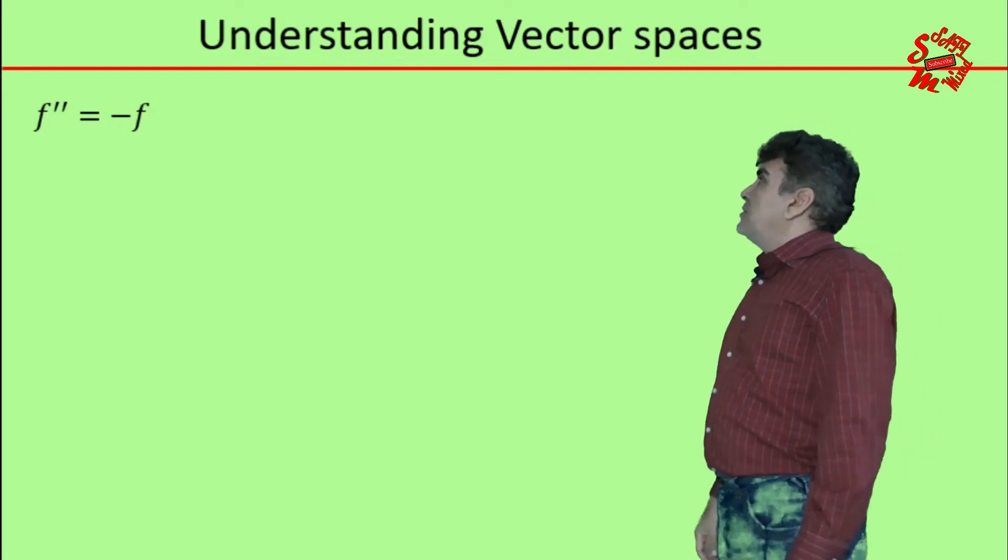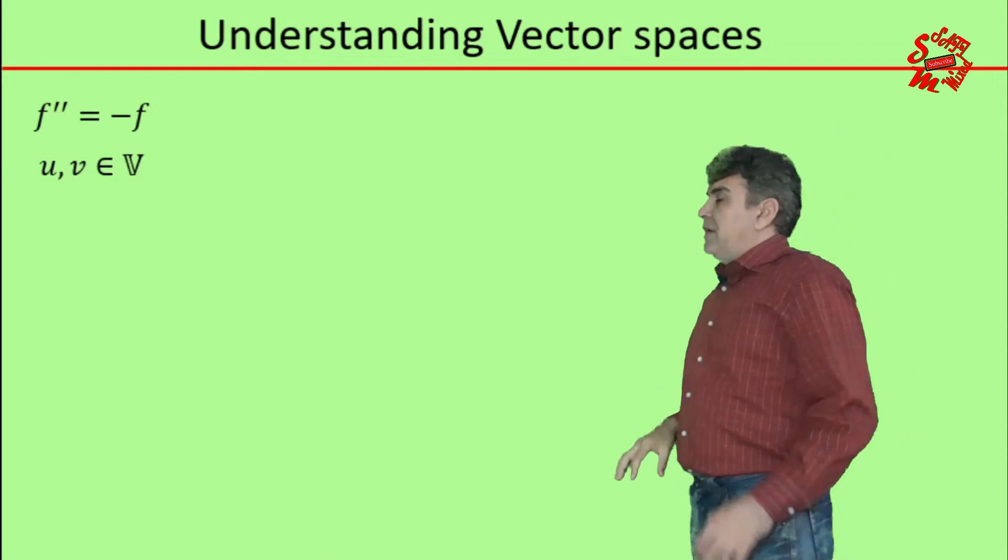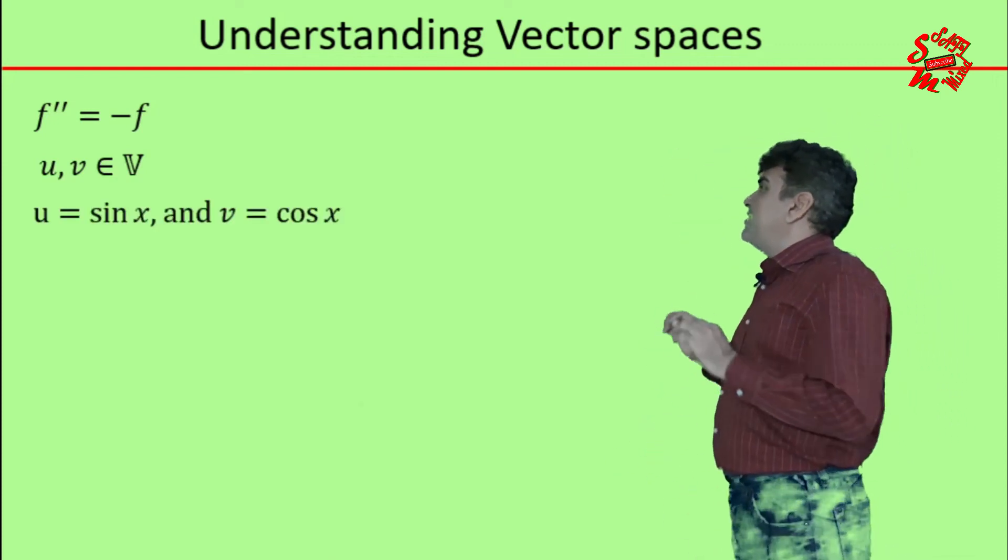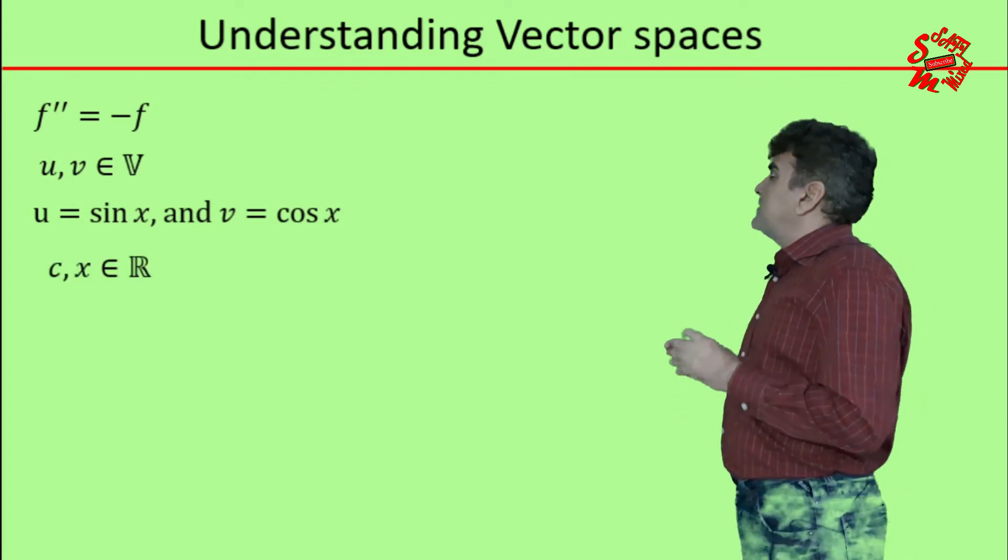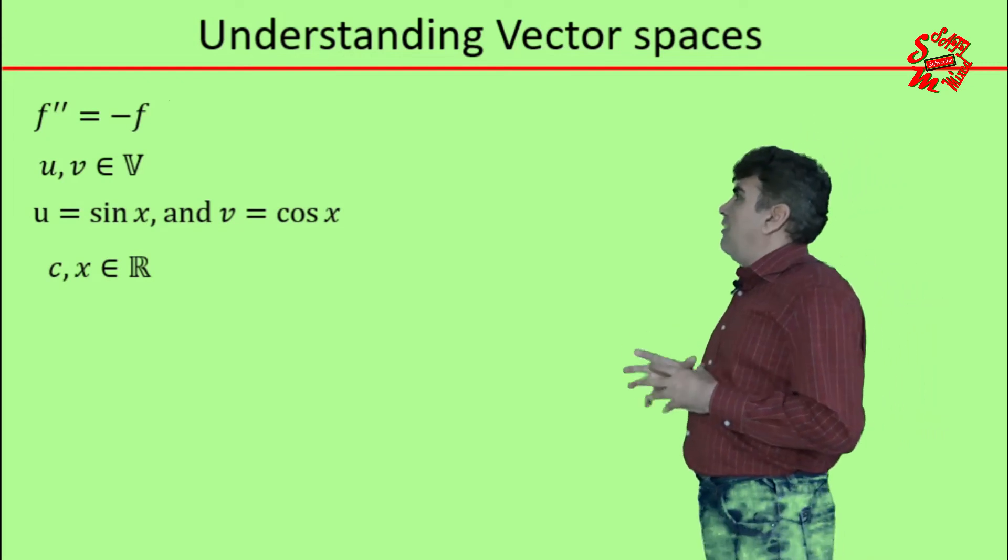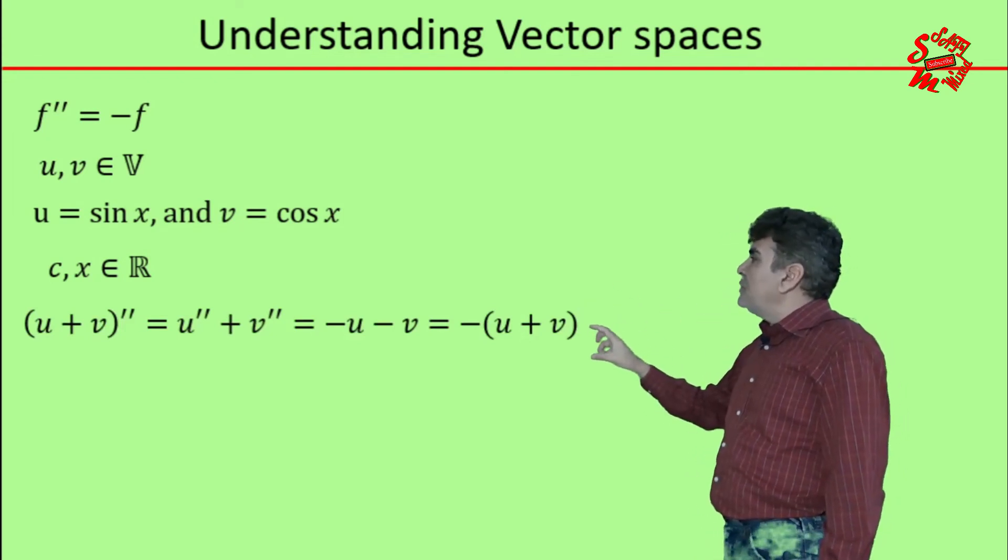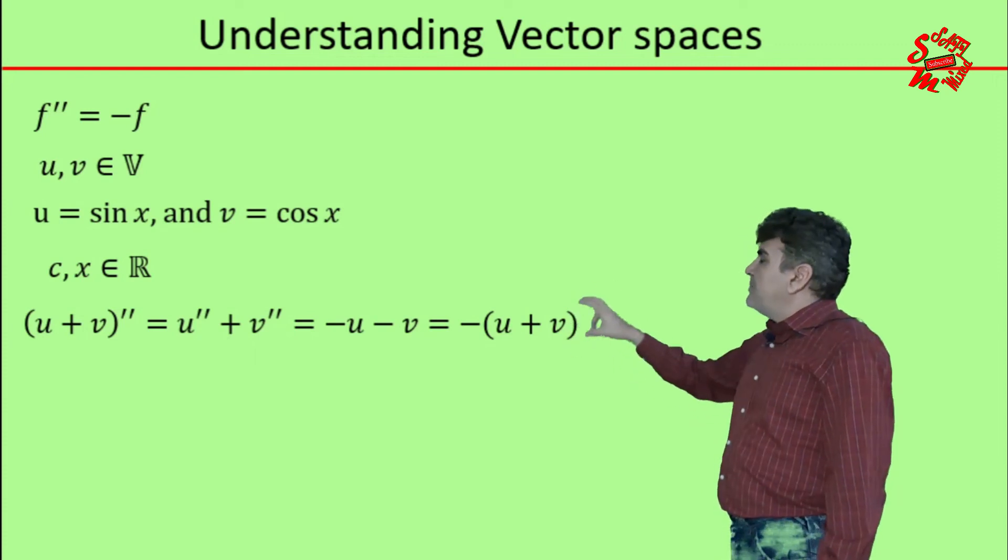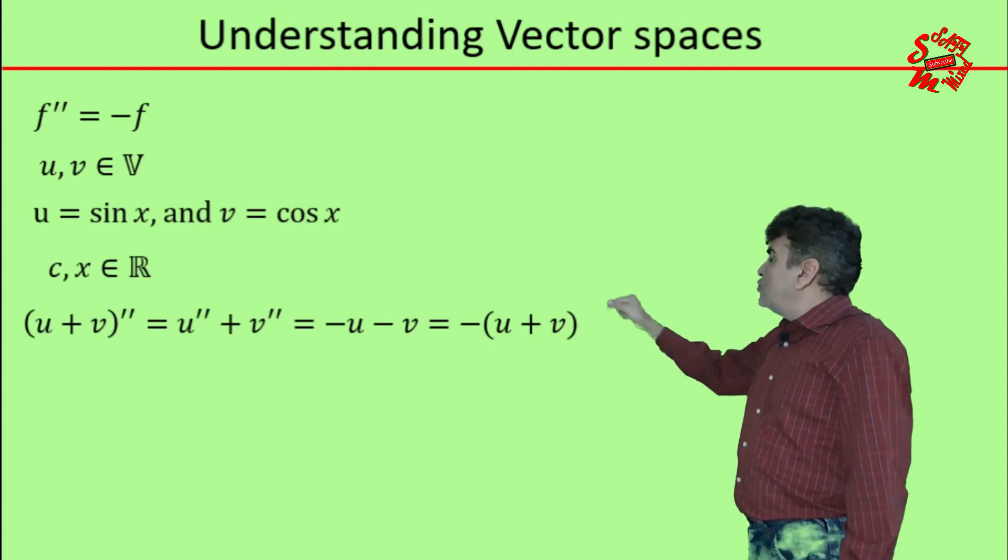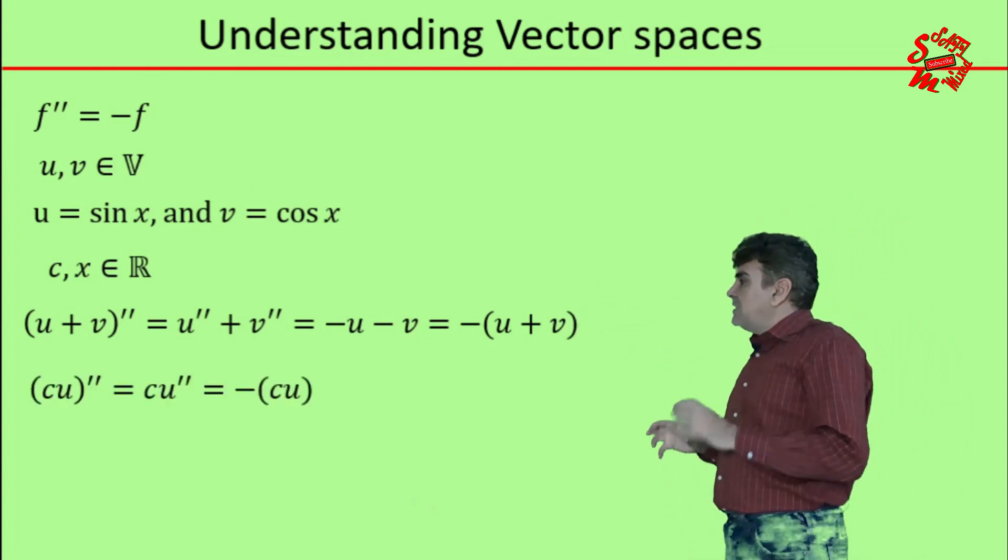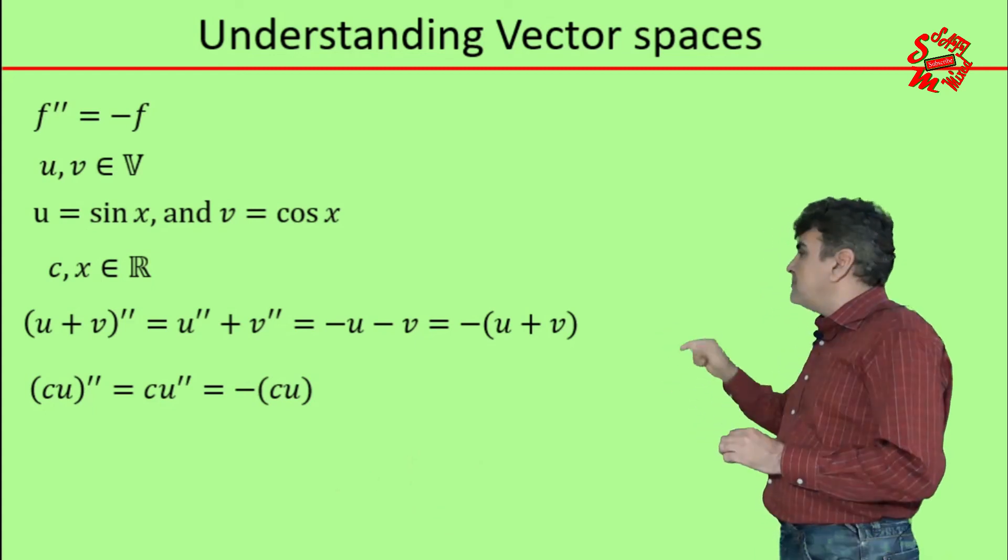I consider a function whose double derivative reproduces the same function multiplied with a negative sign. Then u, v belong to vector space V. Consider u and v to be elements of V, and in order to follow that property, u and v could be trigonometric functions. For example, u could be sine of x and v could be cosine of x, where x and c belong to the set of real numbers R. Now it is not hard to prove that the double derivative of the sum of u and v is in fact equal to the double derivative of u added to the double derivative of v, and of course, following that property, I can write that this is equal to minus (u plus v). Also, one can prove that c multiplied with u, differentiated twice, can be written as c times u differentiated twice, which equals minus c times u.